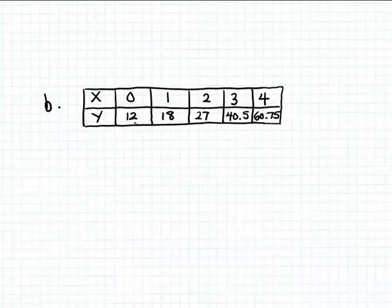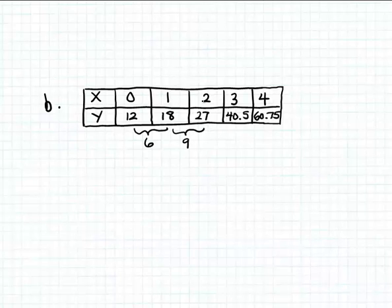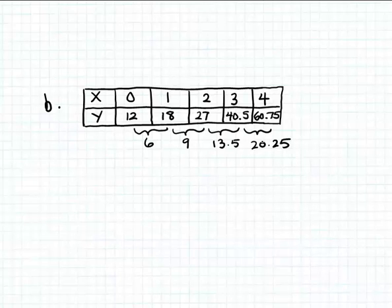As x goes from zero to one, y goes from 12 to 18 — a change of six. When x goes from one to two, the output changes by nine, from 18 to 27. When the input goes from two to three, the output changes by 13.5, from 27 to 40.5. And when the input goes from three to four, the output changes by 20.25. So we're definitely not having a steady change in the output.